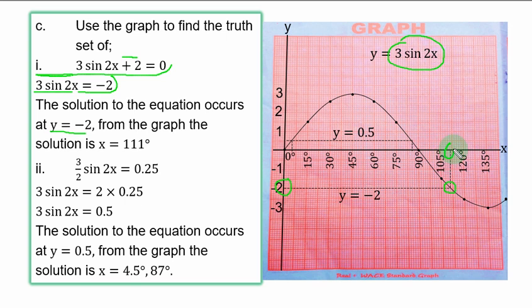You go to the y-axis and you locate -2. Then you trace it to meet the curve at this point, and you trace it to the x-axis. Remember that on the x-axis, one line is 1.5°. So after 105, you have about 4 lines. So those 4 lines means 1.5 × 4, that should give you about 6. So if you add the 6 to 105°, you have 111°.